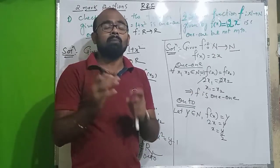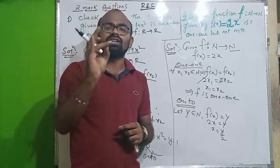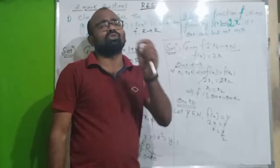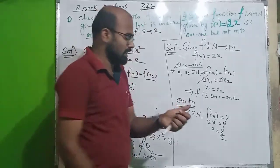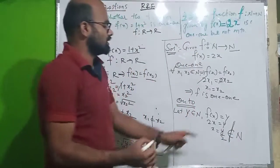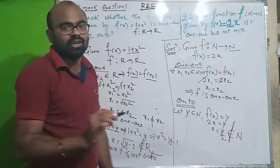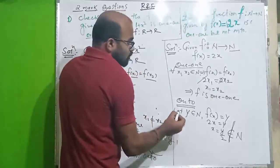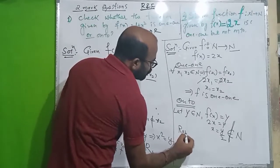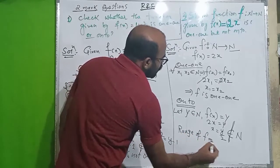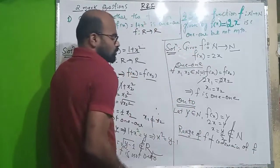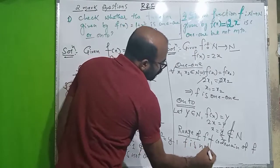But 1 by 2 is not a natural number. Natural numbers are complete numbers: 1, 2, 3, 4, 5 — fractions are not included. So if y equals 3, 5 and so on, then 3 by 2, 5 by 2 are not in the natural numbers. So x does not belong to N. Therefore the range of f is not equal to the codomain of f, and hence f is not onto.